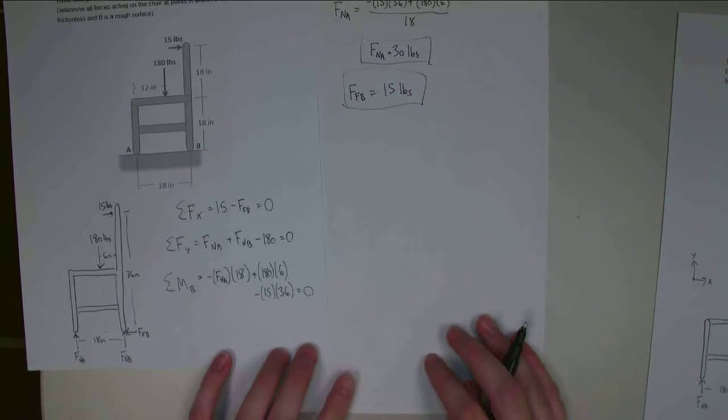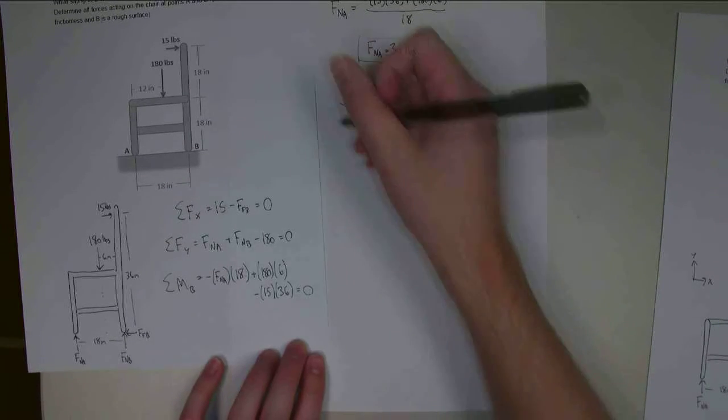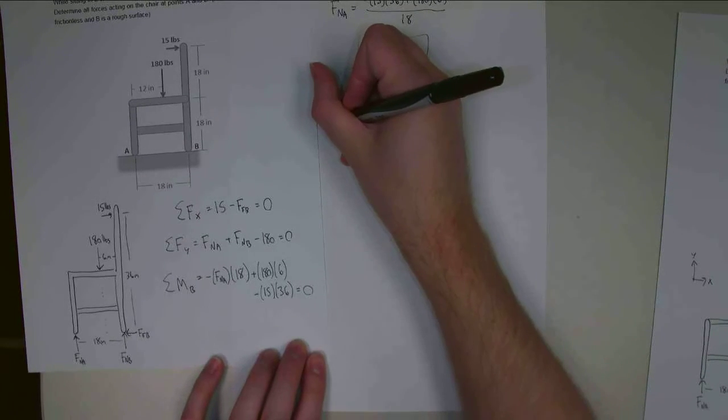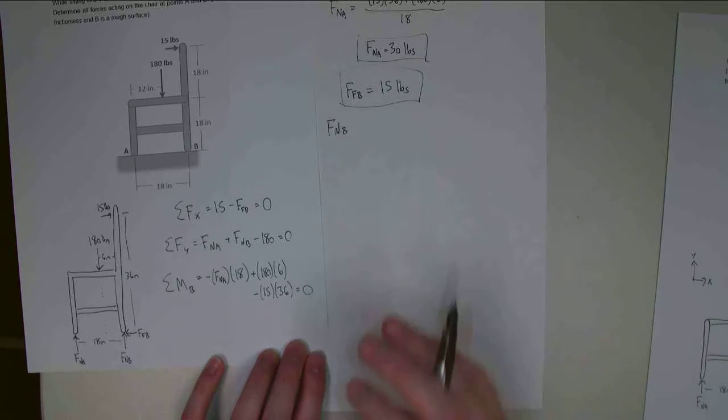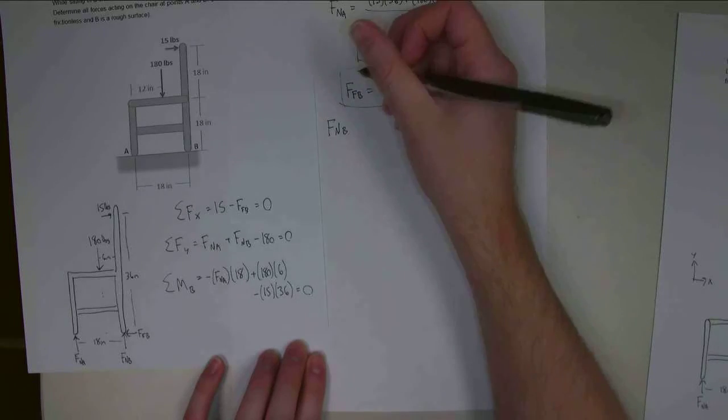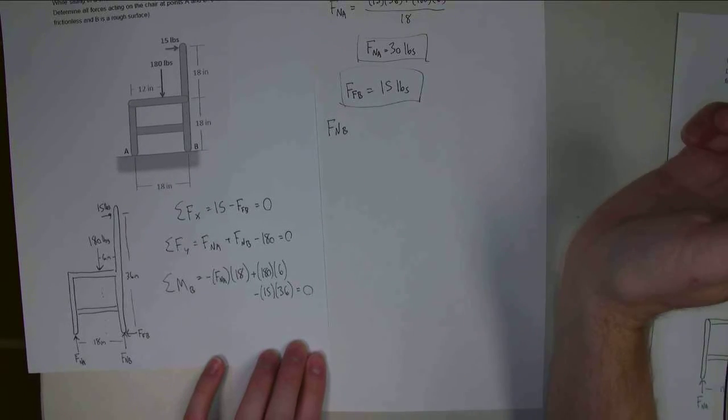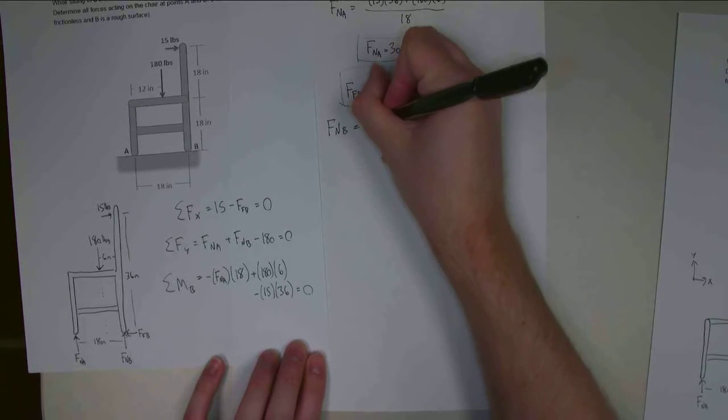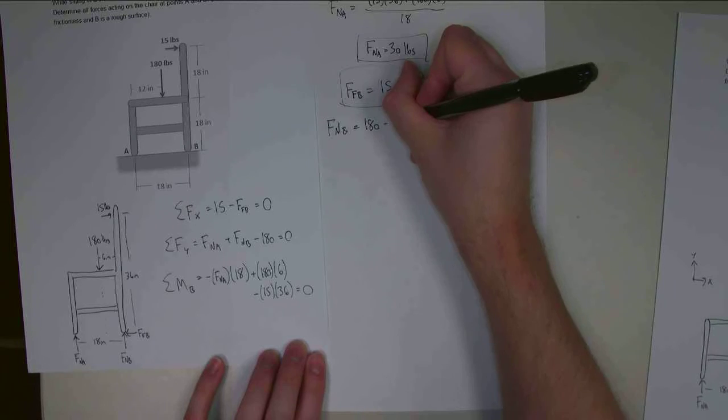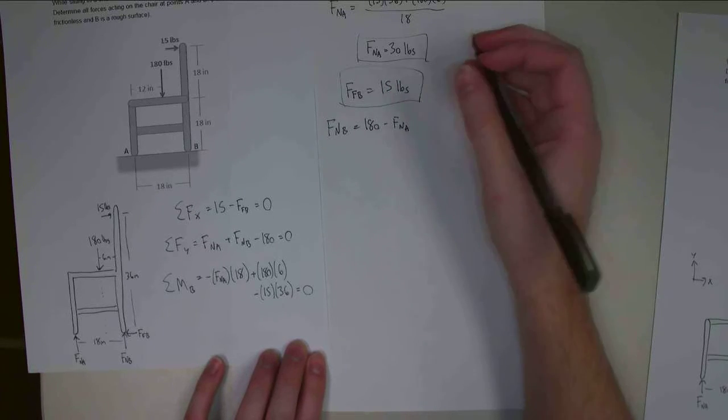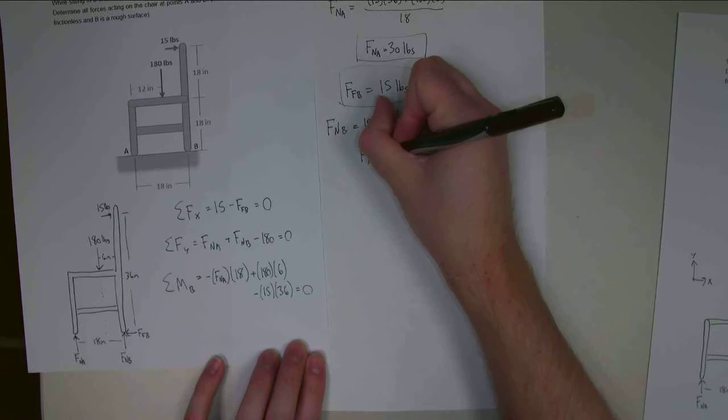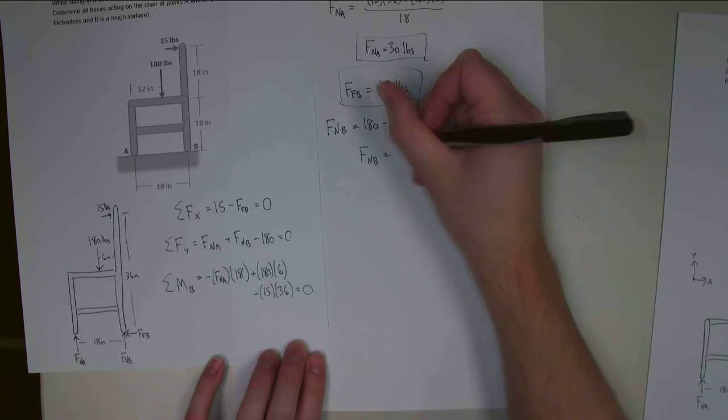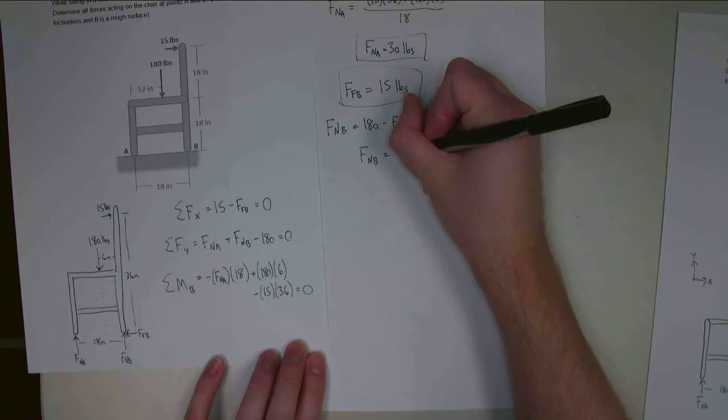Alright, and finally, I'm going to look at F_NB, the normal force at B. And F_NB is going to be equal to 180 minus F_A. F_A is 30 pounds, so F_NB is going to be the remaining 150 pounds.